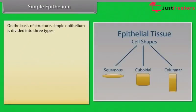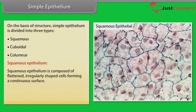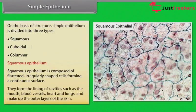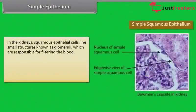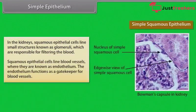On the basis of structure, simple epithelium is further divided into three types. Squamous epithelium is composed of flattened, irregularly shaped cells forming a continuous surface. They form the lining of cavities such as the mouth, blood vessels, heart and lungs, and make up the outer layers of the skin. In the kidneys, squamous epithelial cells line small structures known as glomeruli, which are responsible for filtering the blood. Squamous epithelial cells line blood vessels where they are known as endothelium, which functions as a gatekeeper for blood vessels.